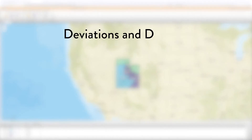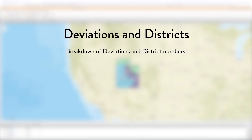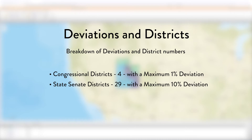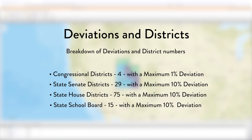Before you begin, note on deviations and districts. The maximum deviation and district numbers are set by law and cannot be changed. The breakdown is as follows: Congressional districts — 4, with a maximum 1% deviation. State Senate districts — 29, with a maximum 10% deviation. State House districts — 75, with a maximum 10% deviation. State School Board — 15, with a maximum 10% deviation. If you would like more information on what maximum deviation is, visit uirc.utah.gov.